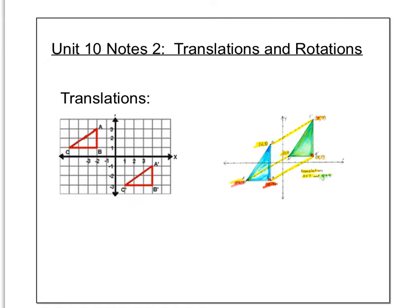So translations — you can see two examples here. A translation is basically a slide. A translation is when you take something and slide it somewhere else on the plane. Point A slid over here, point C slid over here, point B slid over here. They all slid the same amount and in the same direction.